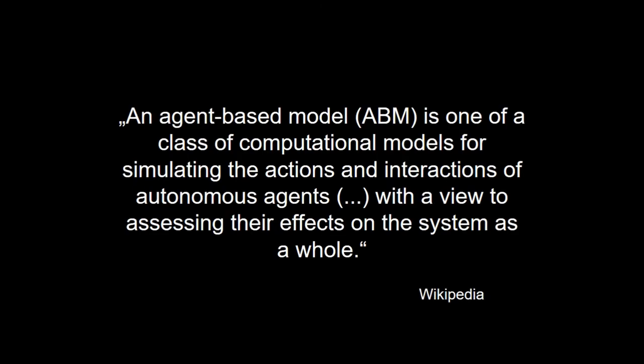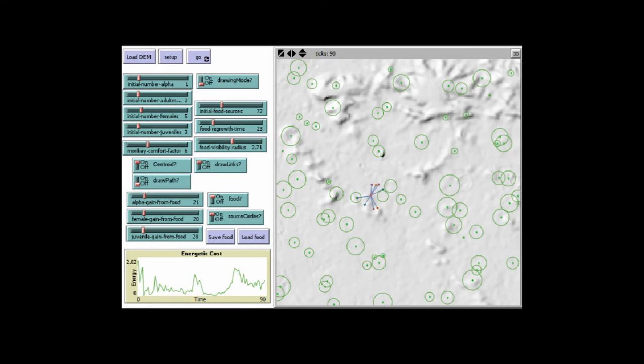I'm doing a lot of agent-based modeling, and for all of you who are not so familiar with it, let me give you a very quick introduction — the Wikipedia way. An agent-based model, ABM, is one class of computational models for simulating the actions and interactions of autonomous agents with a view to assessing their effects on the system as a whole. Agent-based models are basically computer-based simulations, little computer-based laboratories where we can explore human behavior.